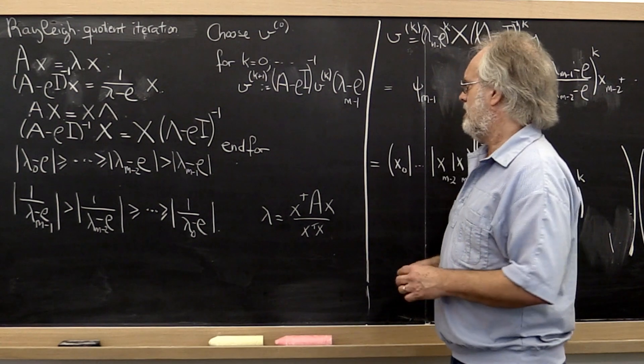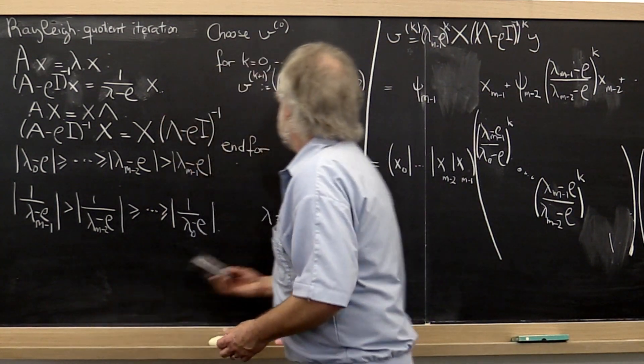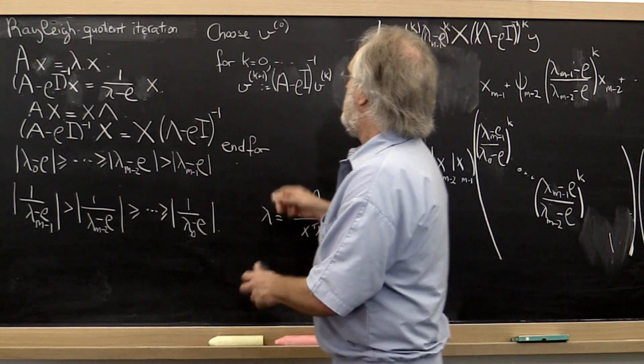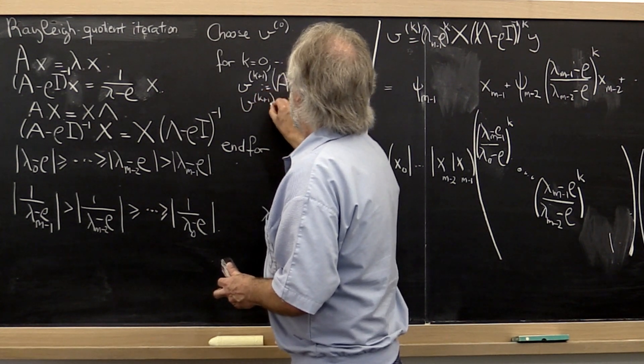Now what does that mean? Well, that means that if we're iterating here, and let's say we're iterating in such a way that at every step we keep our vector of length 1,